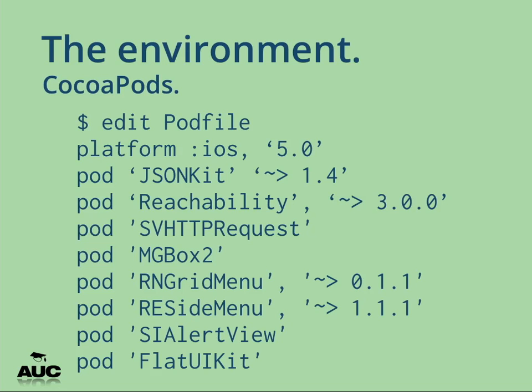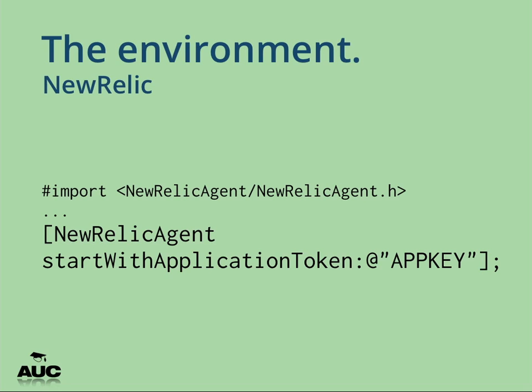For this project I'm pulling in these pods: JSONKit, Reachability, SVHTTPRequest, MGBox 2, a grid menu, a side menu, an alert view, and FlatUIKit which makes it look a bit better. Also New Relic — when you start reaching scale you need to analyze every part of your stack: your server, your application, everything you're connecting to. New Relic can visualize all that data. Inserting it into your iOS project is literally three lines in your app delegate.